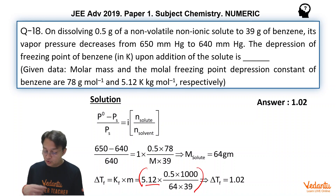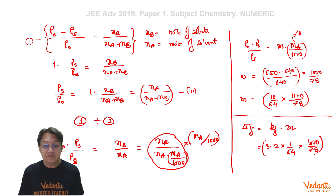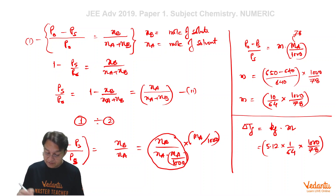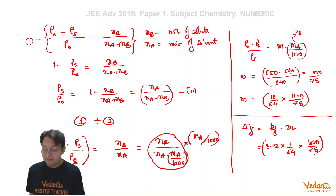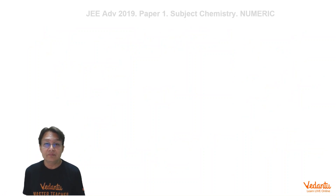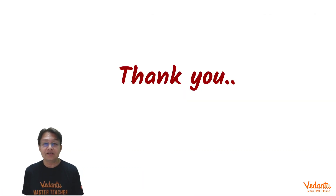I hope you understand this solution. The key equation is (P0 minus PS) / PS equals Nb / Na, which has been converted into molality form — a very interesting equation from which you can solve the problem directly. I hope you enjoyed this problem. Thanks very much for watching.